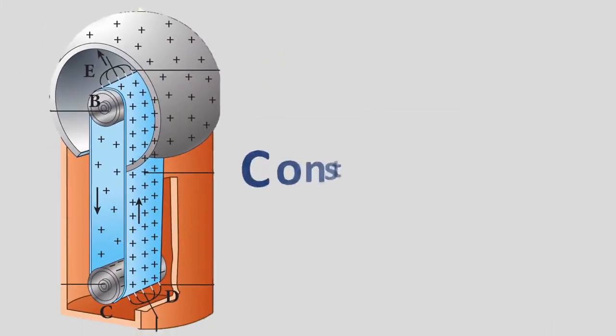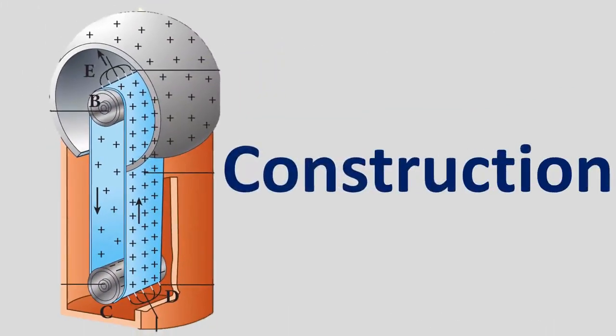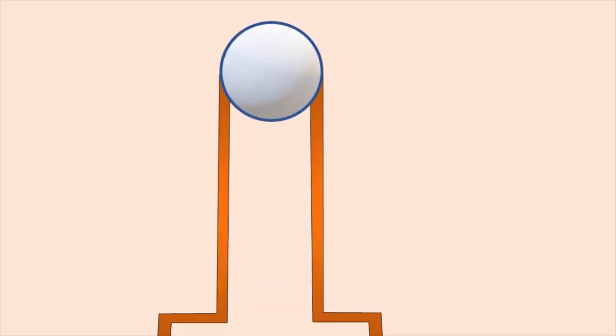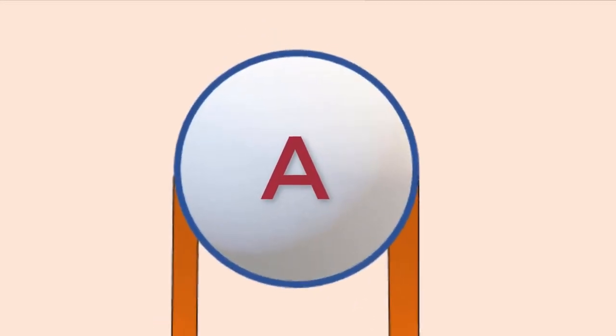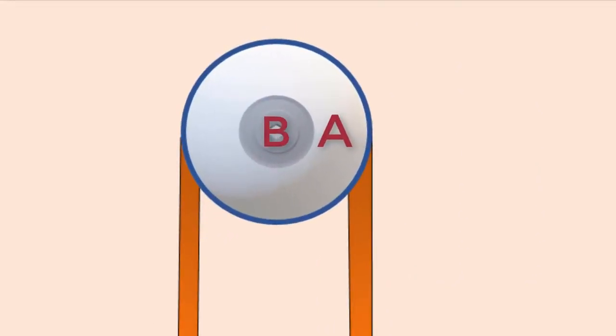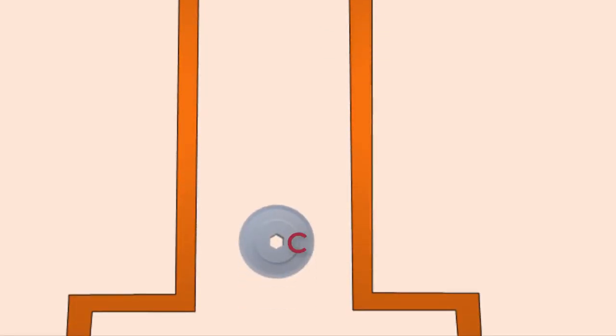Now, let us see the construction of Vandegraaff generator. A large hollow spherical conductor A is fixed on the insulating stand. A pulley B is mounted at the center of the hollow sphere and another pulley C is fixed at the bottom.